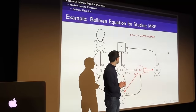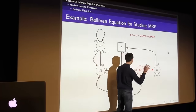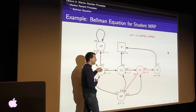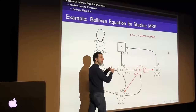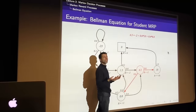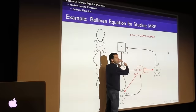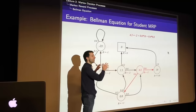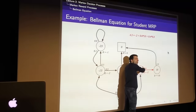A student asks about the reward R shown on the diagram. Upon exiting a state, regardless of where you end up, you receive the reward indicated. So exiting class one gives minus 2, class two gives minus 2, class three gives minus 2, the pass state gives plus 10, and the sleep terminal state gives 0 repeatedly. The reward depends only on the state you're in; it could also be made to depend on the action or successor state in more general formulations.